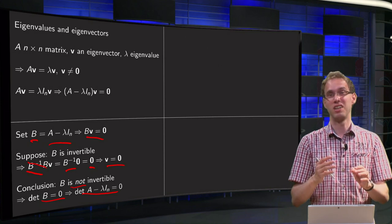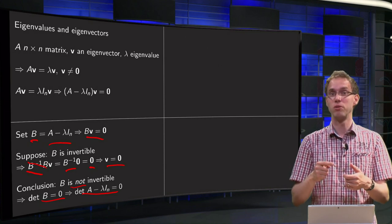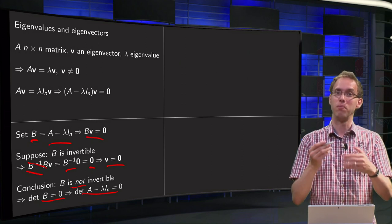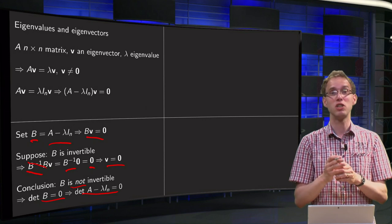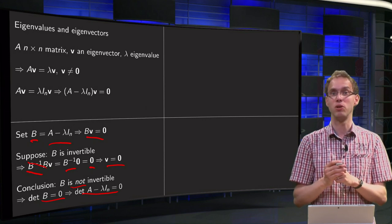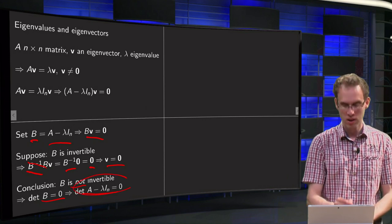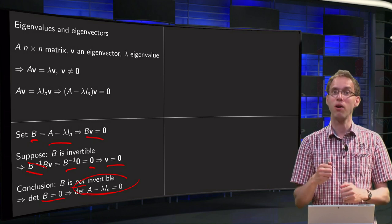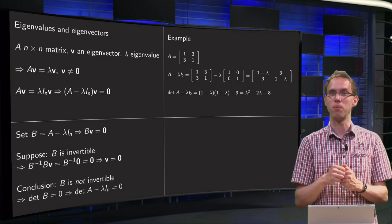How does that help us? Well, we started with the equation which contains two unknowns, the lambda and the V. But now we have done some manipulations and we are now at an equation which contains only one of the unknowns, only the lambda. So we can use this equation with the determinants to compute our lambda as we will see in the following example.